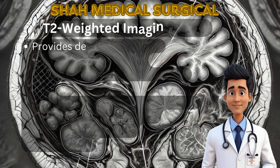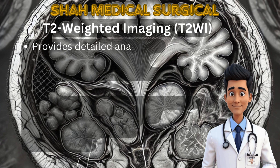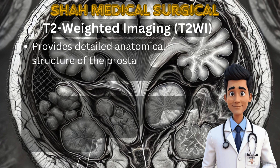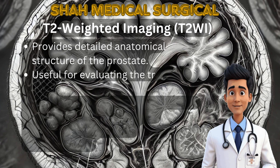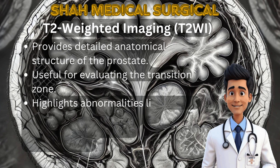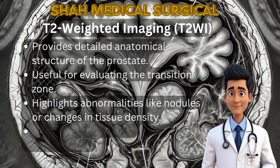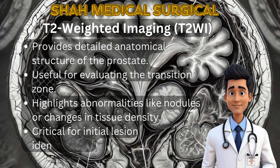T2-weighted imaging provides detailed views of the prostate's anatomical structure, making it especially useful for evaluating the transition zone. It highlights abnormalities such as nodules or changes in tissue density, playing a crucial role in initial lesion identification.